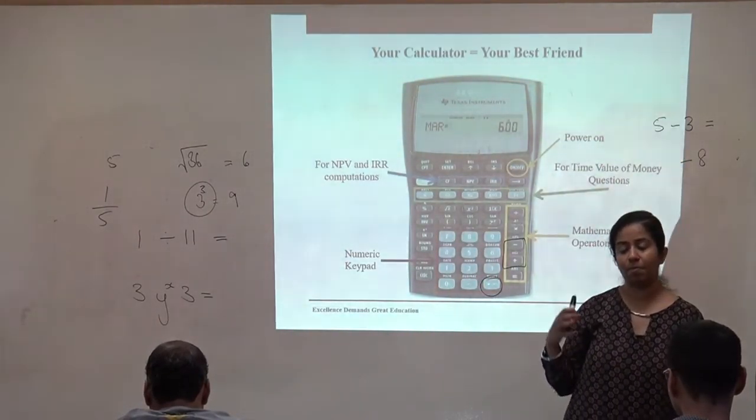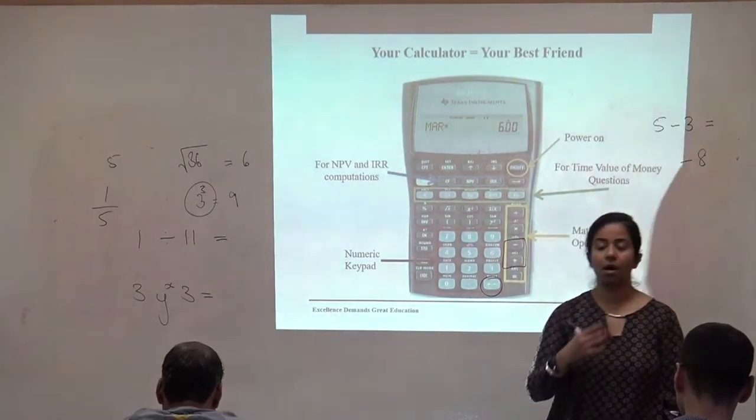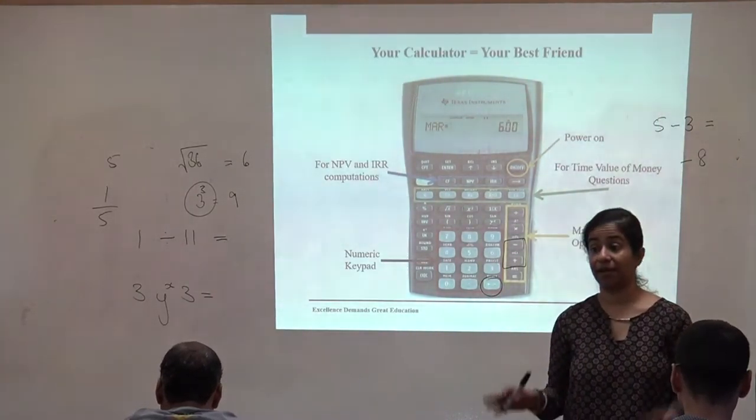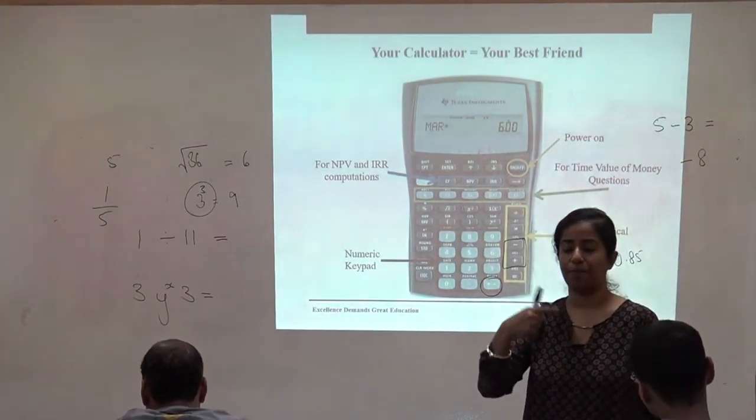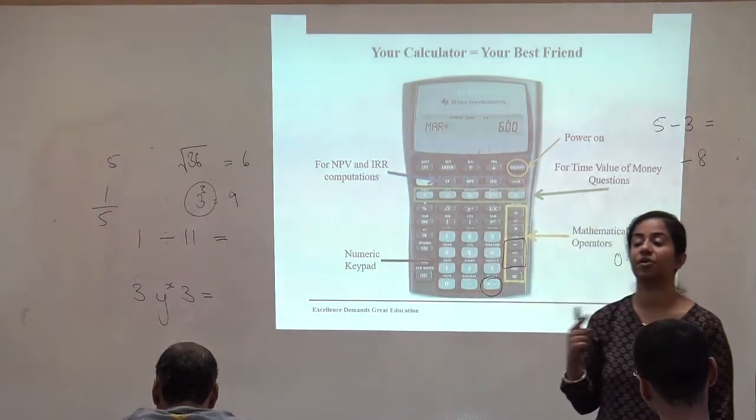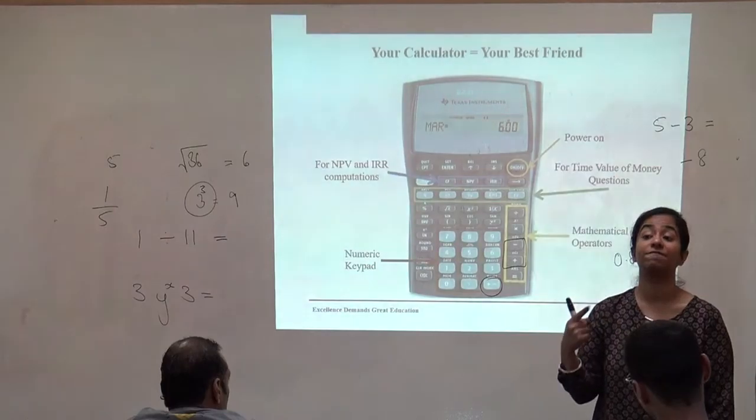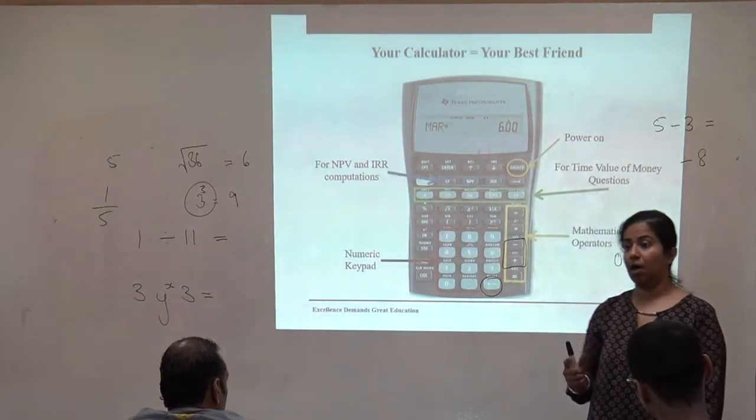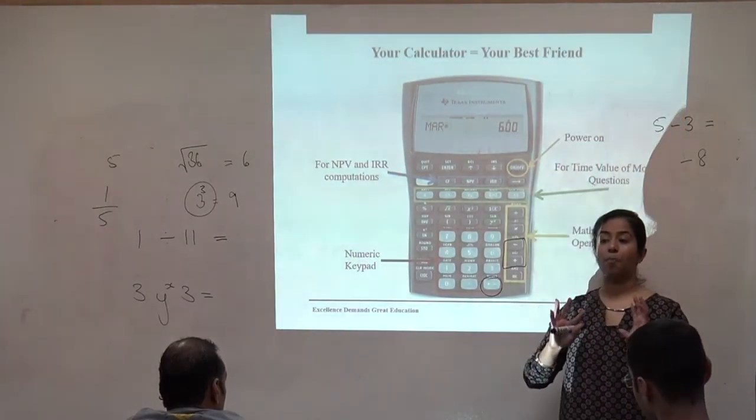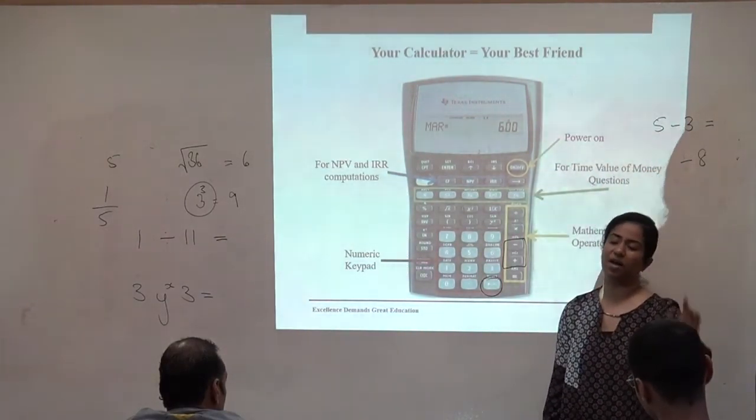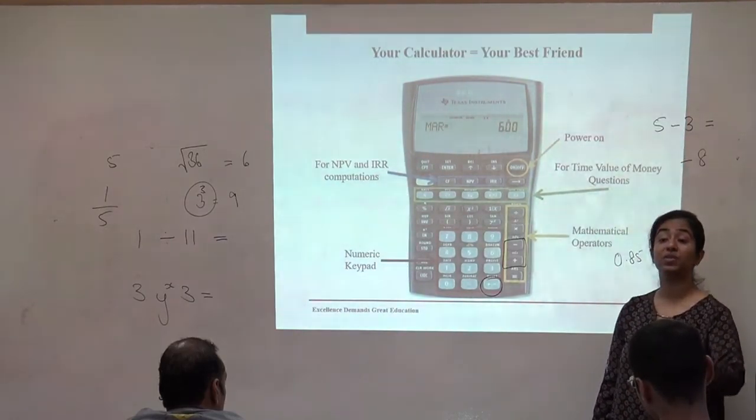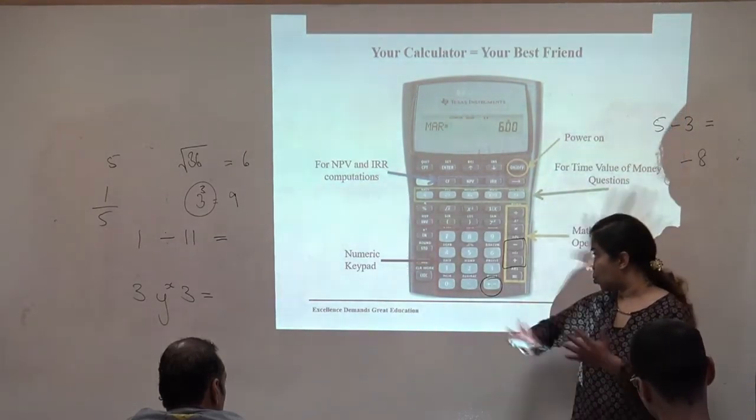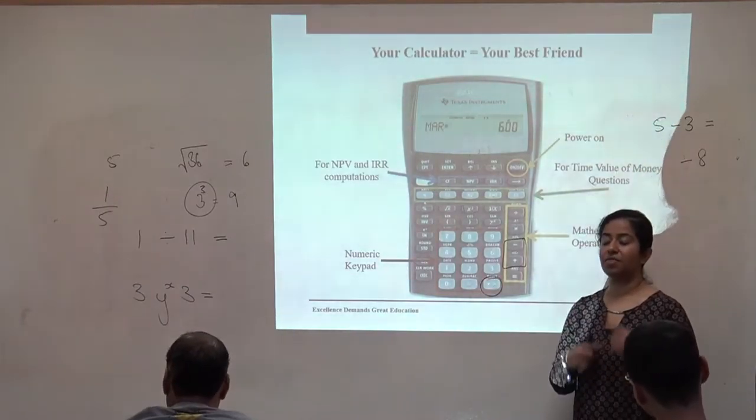These are your brackets, which you may use for calculation. And y to the power of x is in the event you want to take 3 to the power of 3. Notice there's no cube button here. You will use y to the power of x. The way to do this calculation will be you type 3, you will type yx, you will type 3 again, and you will hit the equal to sign. All good?